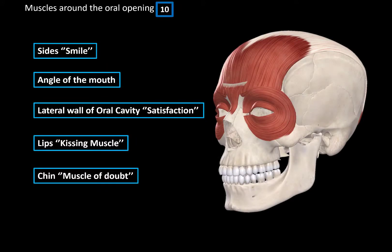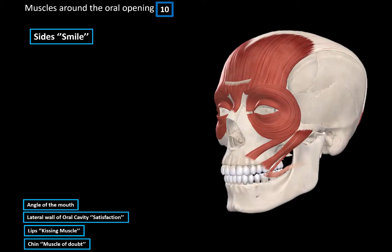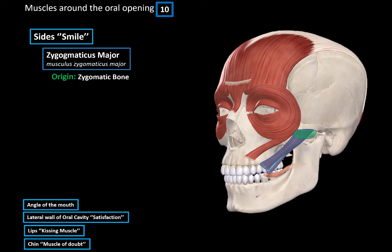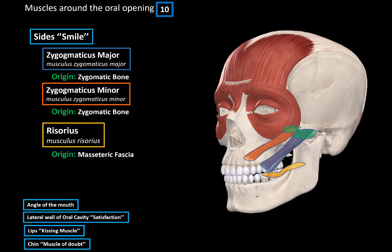Next we have the muscles around the oral opening — ten muscles divided into five groups based on the facial expression they produce. The first group are the muscles on the side of the mouth that produce a smile. All have a common insertion point but different origins. These are the zygomaticus major, originating from the zygomatic bone; the zygomaticus minor, also originating from the zygomatic bone but more anteriorly; and the risorius muscle, originating from the masseteric fascia — the connective tissue fascia covering the masseter muscle. These three muscles insert at the skin of the angle of the mouth to produce a smile.